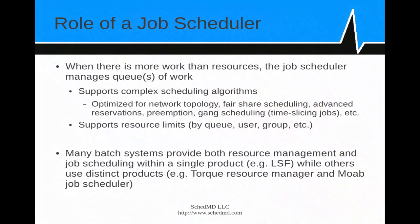Job scheduling is sometimes a separate product from resource management. If you've got more work than resources, the job scheduler manages the queue of work. It typically has complex algorithms for scheduling that take into consideration network topology, fair share scheduling, advanced reservations, job preemption, and gang scheduling — which is time slicing of parallel jobs. It typically also supports resource limits by user, queue, group, and that type of thing.